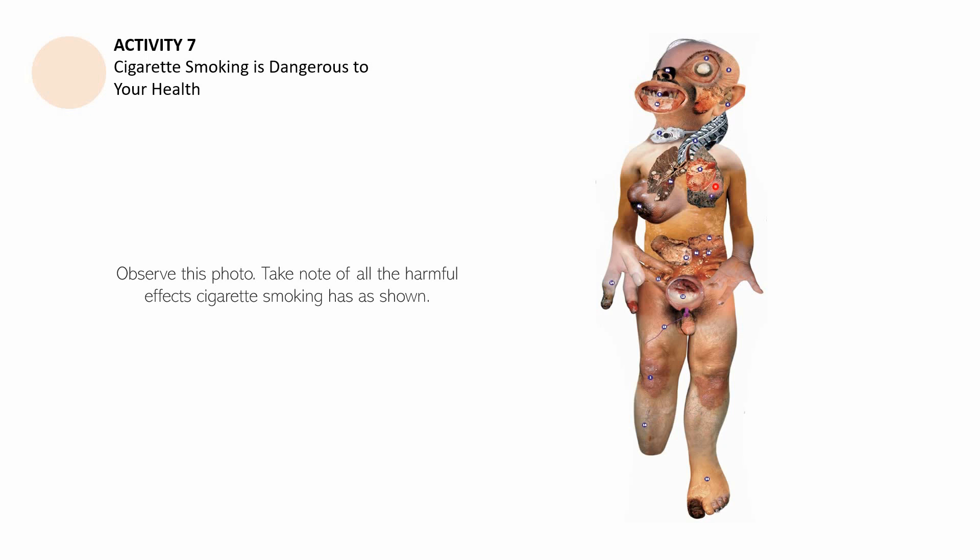The lungs, and then what are these? You have here a device. What is that? And then we have this one. Look at these fingers, they're depicting some different things. You can see these different parts. I want you to observe this photo and take note of at least three of the harmful effects of cigarette smoking as shown here in the respiratory and circulatory system.